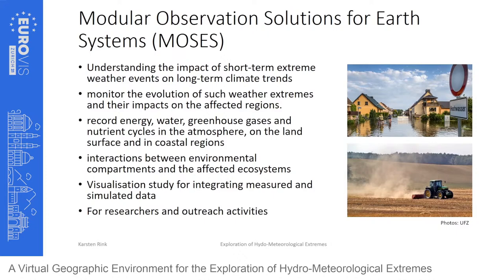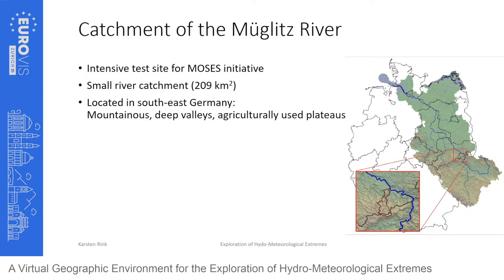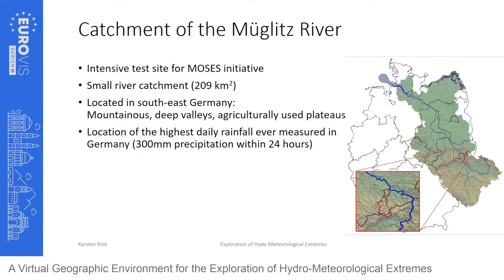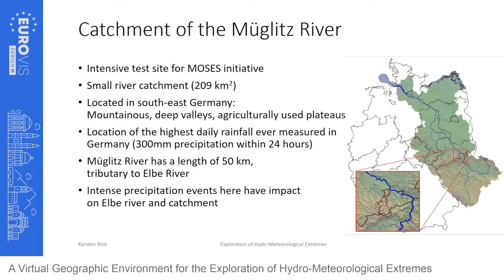The region we focus on is the catchment of the Muglitz River, one of the intensive test sites for the MOSES Initiative. It's a small river catchment in southeast Germany near the Czech border — a mountainous region with deep valleys and agriculturally used plateaus, and the location of the highest daily rainfall ever measured in Germany: 300 mm within 24 hours. The Muglitz is about 50 km long and tributary to the Elbe — the fourth largest river in Europe.